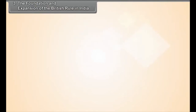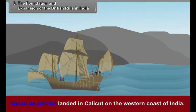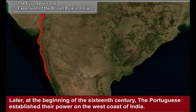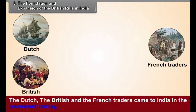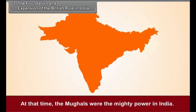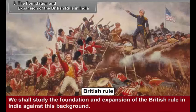Chapter 3: The Foundation and Expansion of the British Rule in India. Vasco da Gama landed in Calicut on the western coast of India. Later, at the beginning of the 16th century, the Portuguese established their power on the west coast of India. The Dutch, the British and the French traders came to India in the 17th century. At that time, the Mughals were the mighty power in India. We shall study the foundation and expansion of the British rule in India against this background.